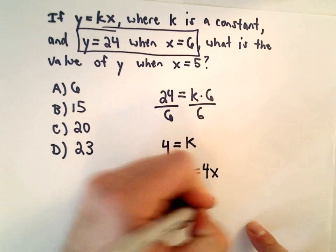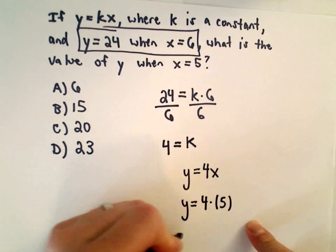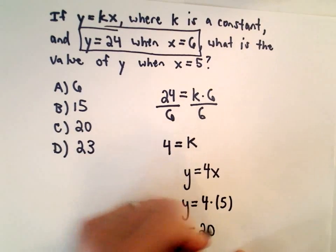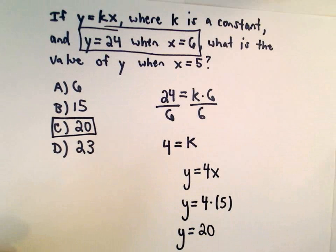Not too bad when x equals 5. We'll get that y equals 4 times 5 or y will equal 20. So answer choice C is the correct choice in this case.